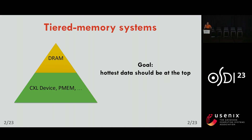As you probably all know, current servers have many tiers of memory, and we usually present them in a pyramid, as shown on this slide. At the top of the pyramid you have DRAM, which is super fast but also very expensive, so you don't have a lot of it. At the bottom of the pyramid you have the slower tier — much cheaper and plentiful, but also quite slow. The goal in all of these systems is to have frequently accessed data on top of the pyramid and less frequently accessed data at the bottom.